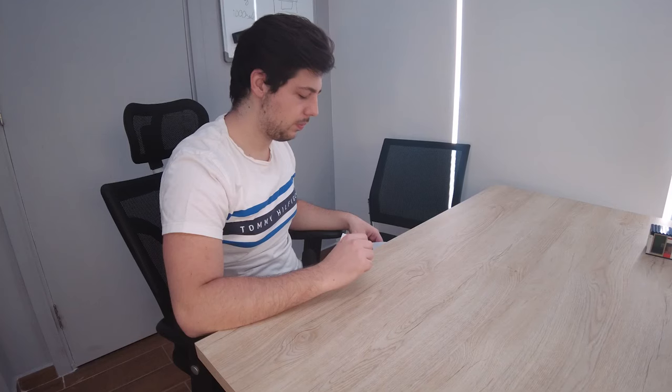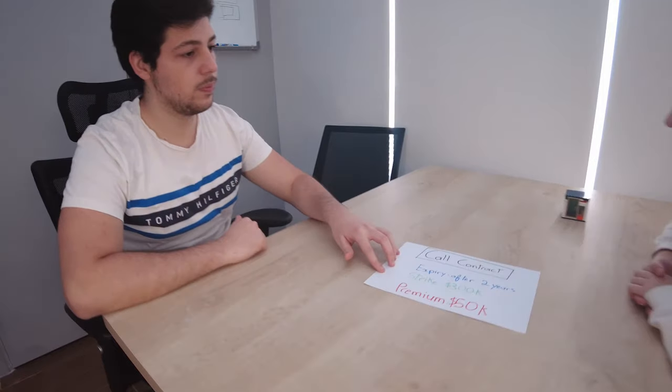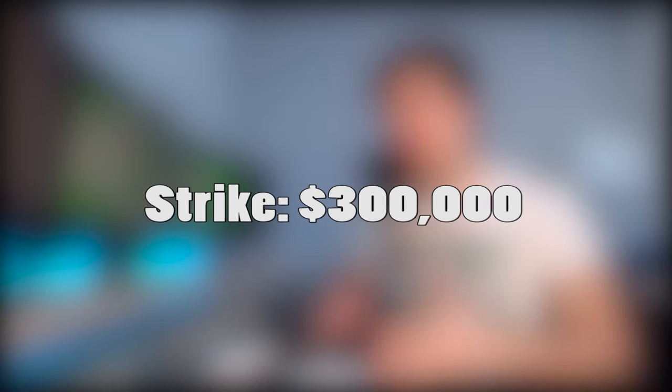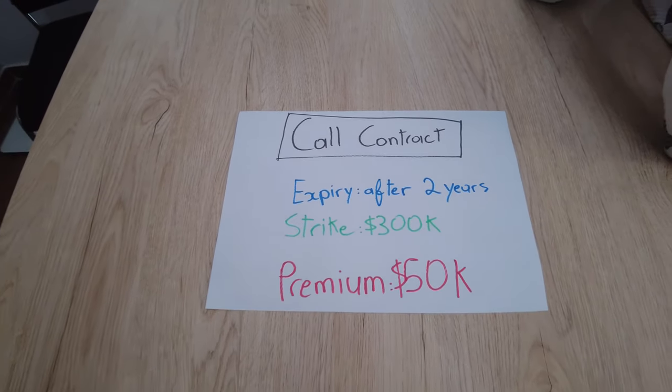To understand options contracts, here's an example. I'm Serop and I own a home worth $300,000. On the other hand, there's Narnia, and she wants to buy this home. At this current stage she doesn't have the funds, but she knows she can pay for it after two years. So I agreed to sell her a contract in which she has the right, not the obligation, to buy this home at $300,000 within the next two years.